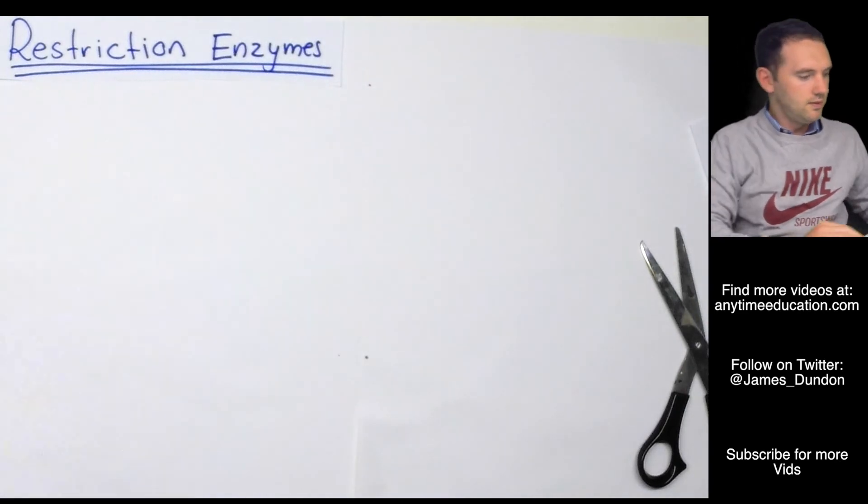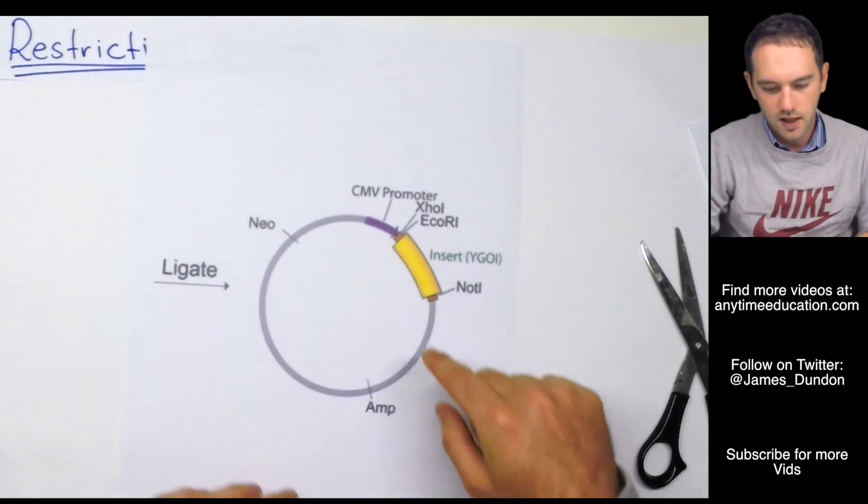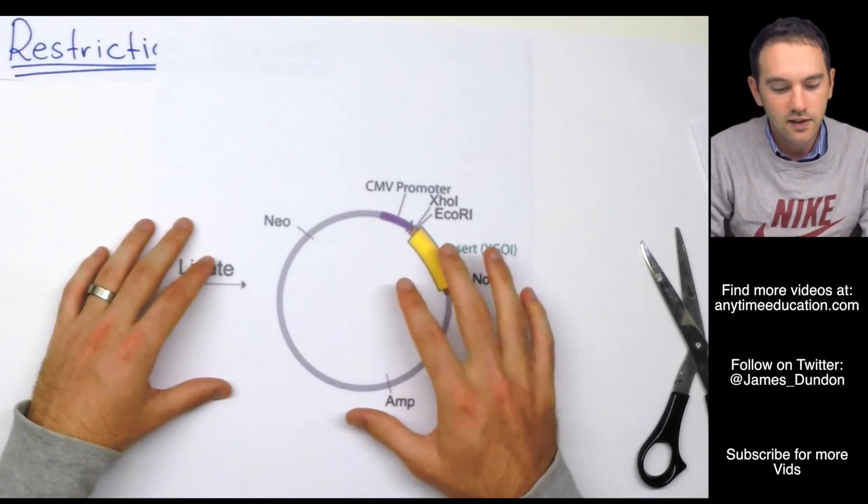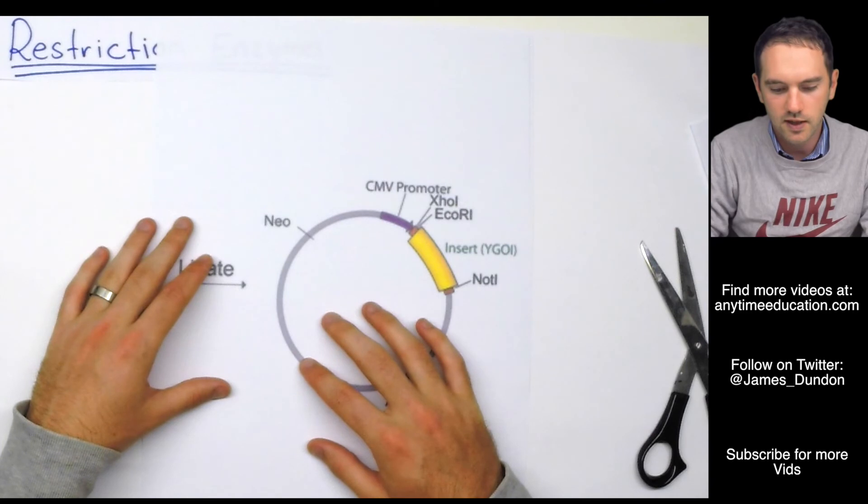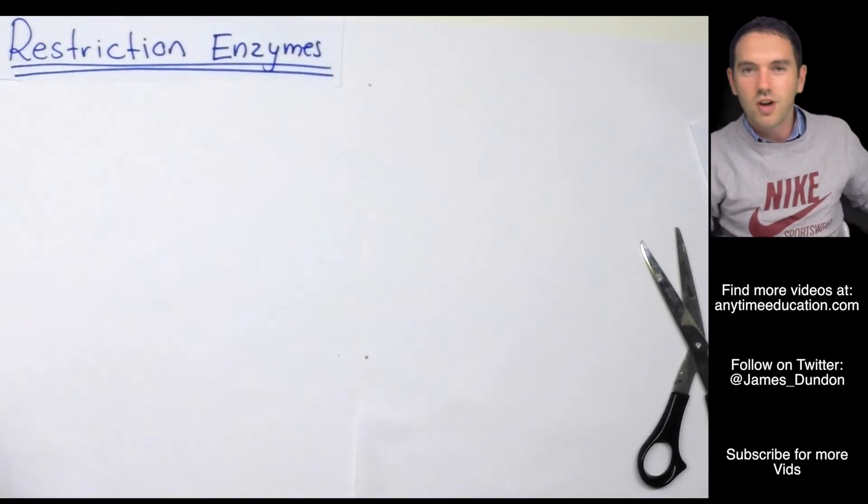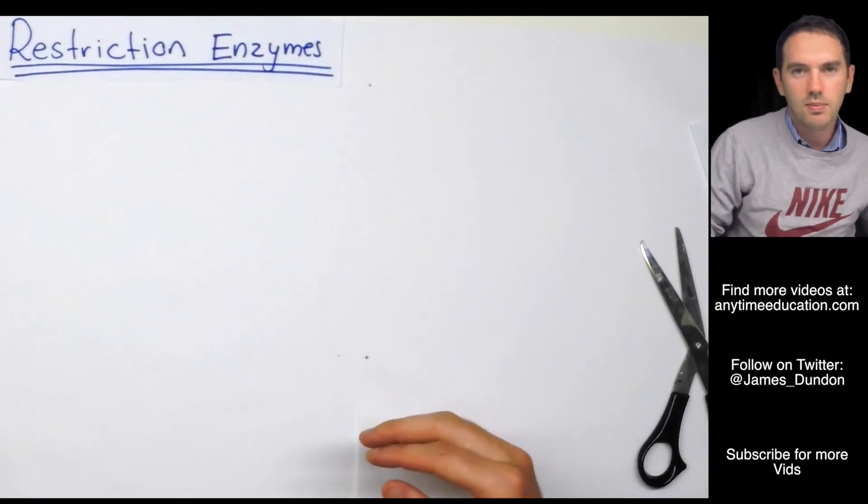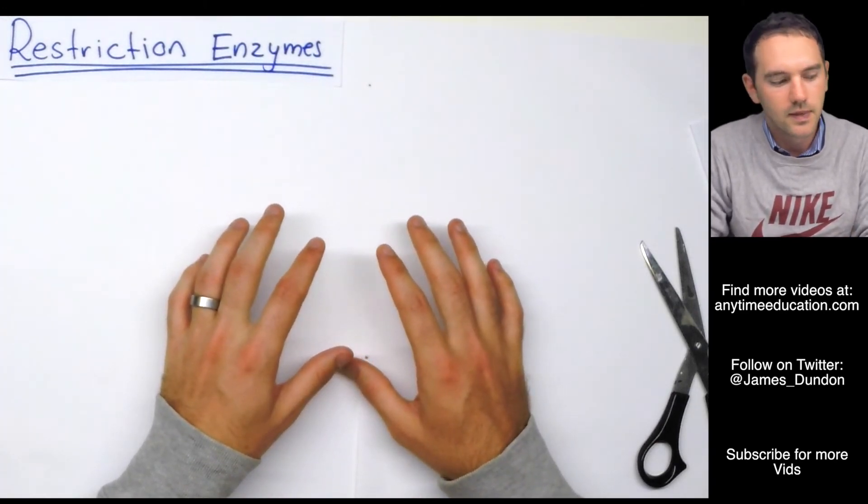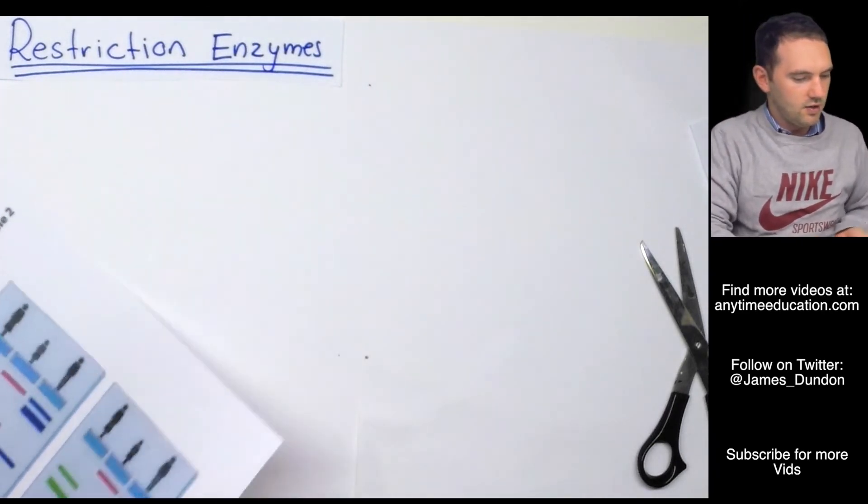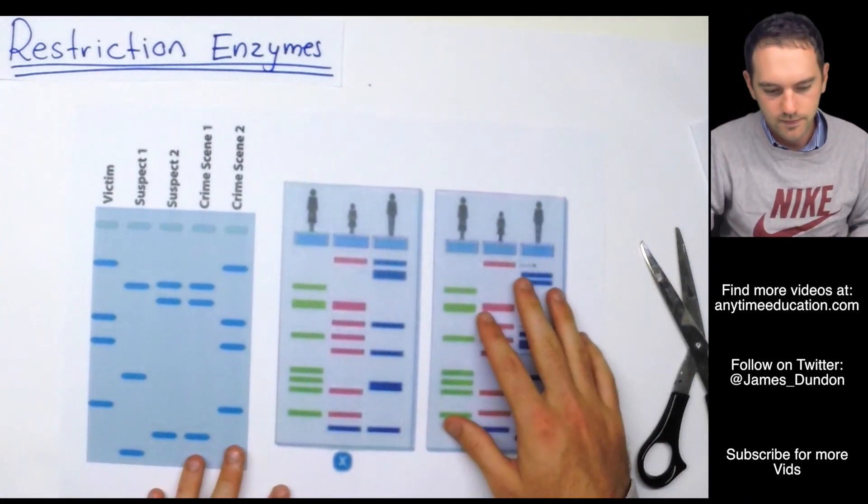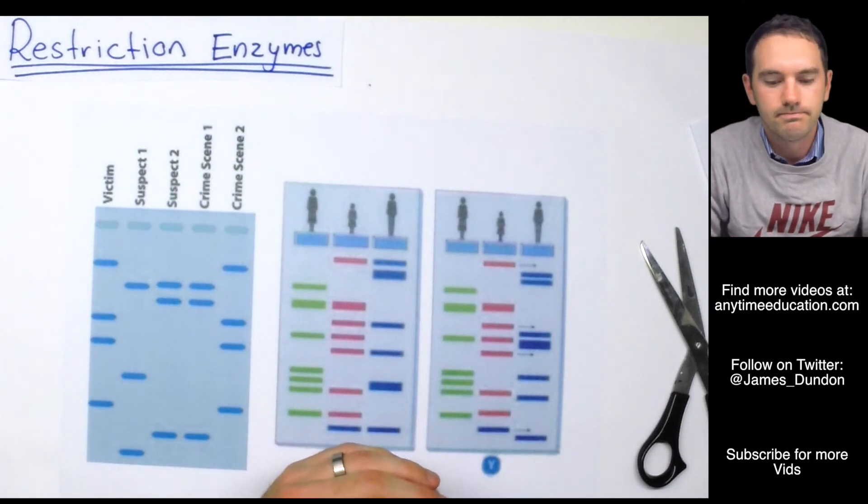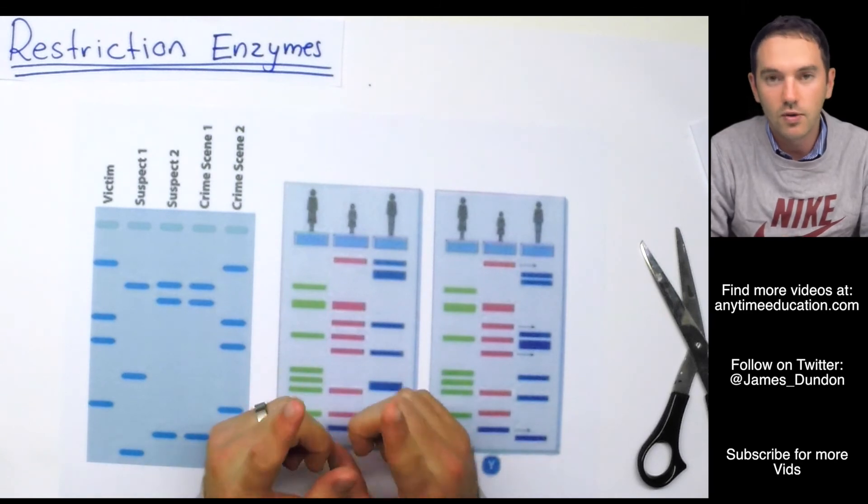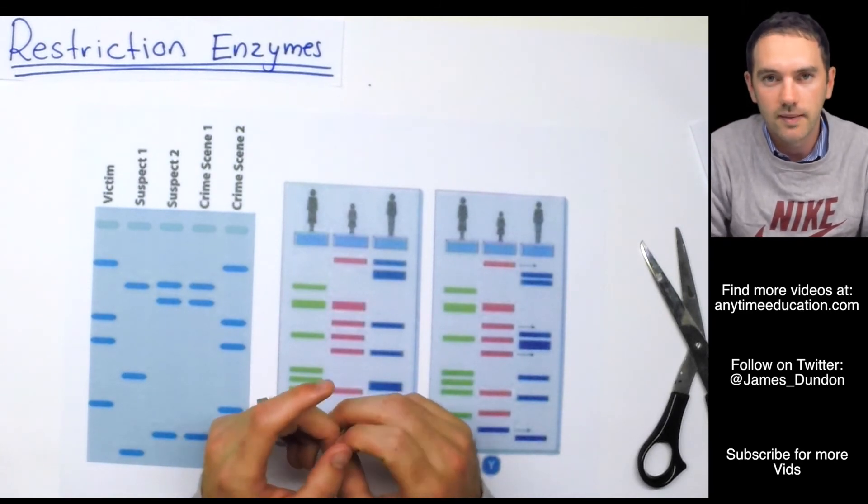So what we end up with is now a bacterial plasmid with our gene of interest inside. Now that's not the only time we use restriction enzymes. We also use restriction enzymes if we're at a crime scene. So we collect a sample of DNA. We then take that DNA and we apply restriction enzymes to it. And then what we end up creating, you've probably seen this before, is a DNA fingerprint.